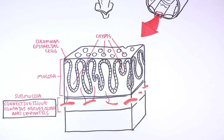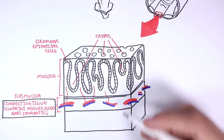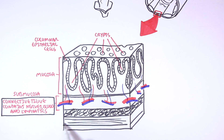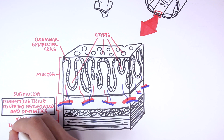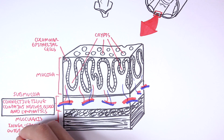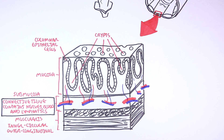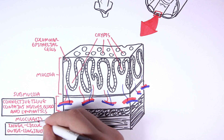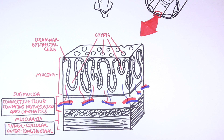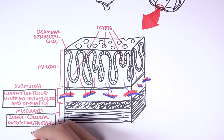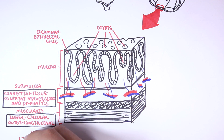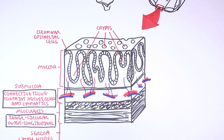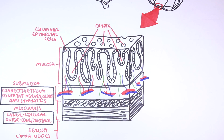Here we have the arteries that supply the cells and veins that leave the area. Then there is the muscularis, which is the muscle layer. There are actually two muscle layers: the inner muscle layer with circular muscles, and the outer muscle layer with longitudinal muscles. The outermost layer of the large intestine is a connective tissue layer called the serosa. After the serosa we can find various structures such as lymph nodes that connect with lymph vessels reaching back to the mucosa layer.